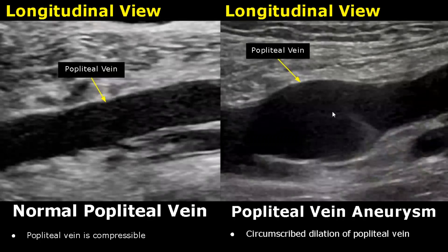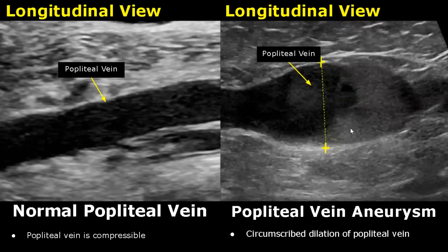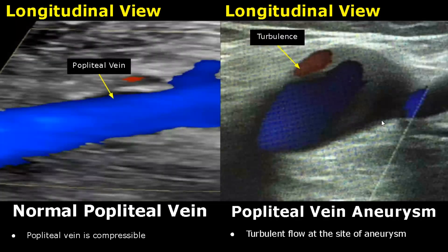Popliteal vein aneurysm is very rare. In this case, you will see a circumscribed dilation of the popliteal vein. Here is another image of popliteal vein aneurysm — there is a circumscribed dilation in a specific part of the vein. Turbulent flow will be seen at the site of aneurysm, and you will see mixing of colors in color Doppler.